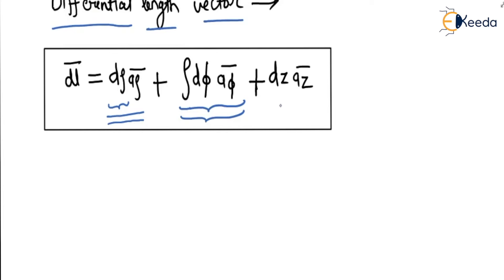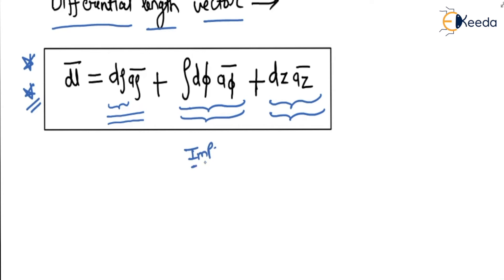When there is a small change in the z direction, it will be dz az, because it is a linear change. So the complete dL vector for the cylindrical coordinate system is dρ aρ + ρ dφ aφ + dz az, and this is very important.